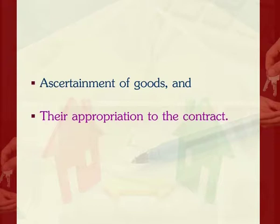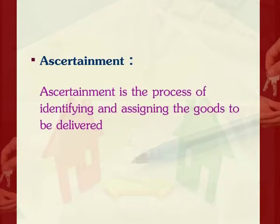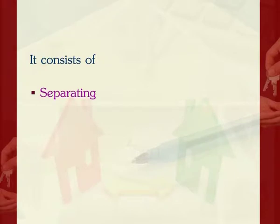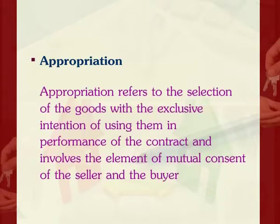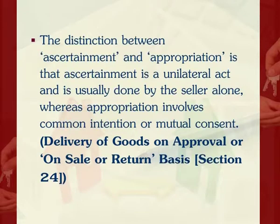Ascertainment is the process of identifying and assigning the goods to be delivered. It consists of separating, measuring, weighing, counting, etc., in relation to the goods, with an intention to identify and determine the specific goods to be delivered under the contract of sale. Appropriation refers to the selection of goods with the exclusive intention of using them in performance of the contract and involves the element of mutual consent of the seller and the buyer. The distinction is that ascertainment is a unilateral act usually done by the seller alone, whereas appropriation involves common intention or mutual consent.